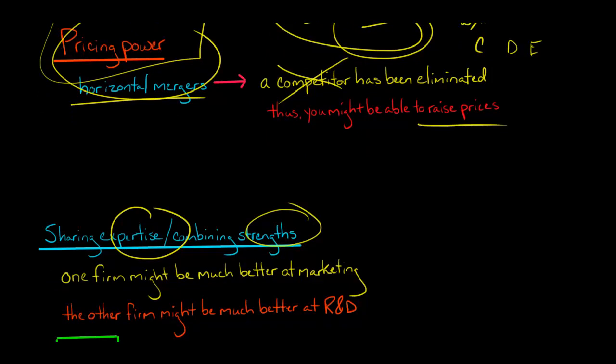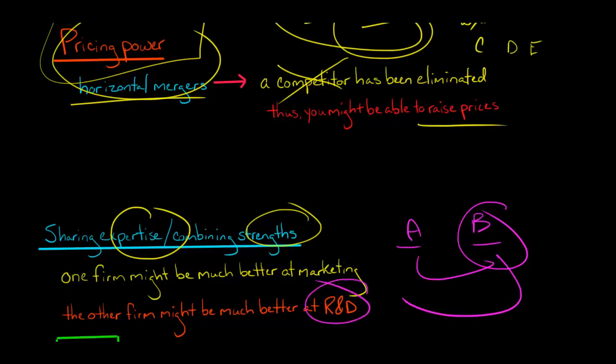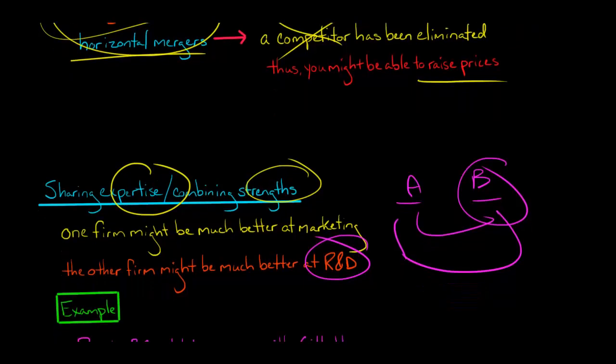Let's say you have one company that was really good at marketing. If we've got company A and company B, company A is great at marketing, Company B is better at research and development. Then company A can teach their marketing tricks and help better position B's products in the marketplace. And then B, in turn, could use their scientists or whoever's doing their R&D to provide additional insights to company A. So they're sharing each other's strengths.